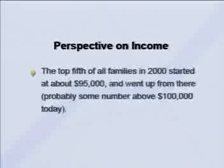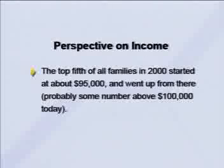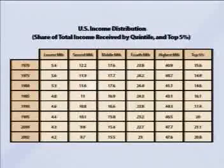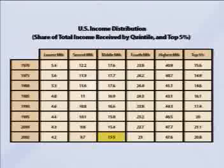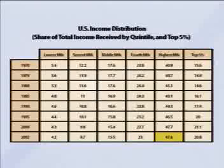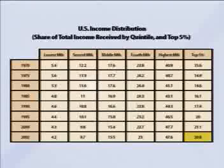Just to give some perspective: the top fifth of all families in the year 2000 started at about $95,000 in total income. In 2002, the bottom fifth of the income distribution got 4.2% of total income. The second fifth got 9.7%. The middle quintile got 15.5%. The fourth fifth got 23%. And the top 20% got 47.6% of total income. Looking inside that top fifth, just the top 5% of the income distribution got about 20.8% of total income in 2002.